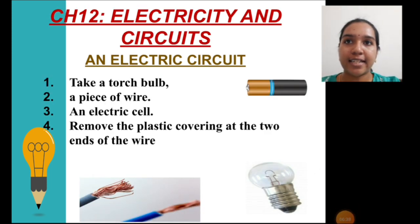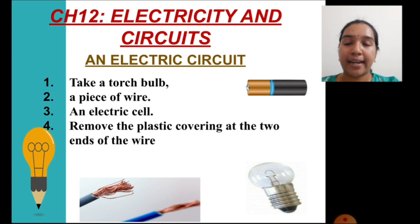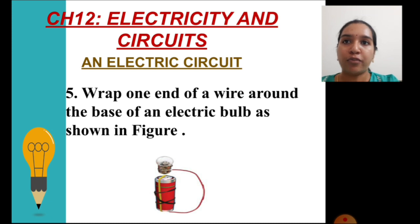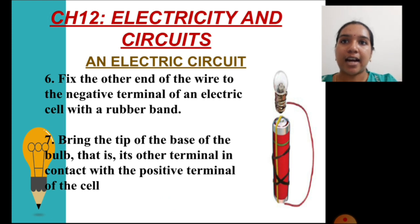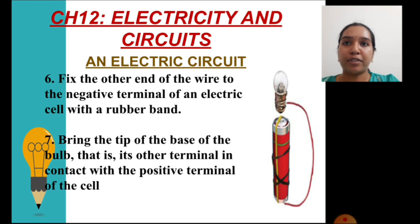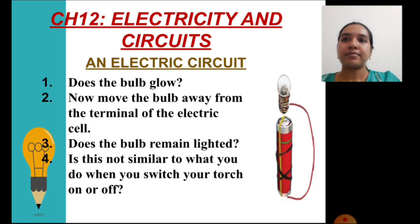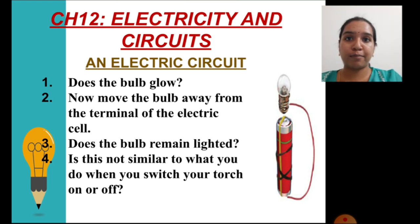To make an electric circuit by yourselves, you need a torch bulb, a piece of wire, an electric cell, and wires with bare ends. One end of the wire will be wrapped at the base of the electric bulb, and the other end to the negative terminal of the electric cell. The tip of the torch bulb base should come in contact with the metal cap of the cell for the bulb to glow. If you move them apart, the bulb does not glow — that means it is in the switch-off position.